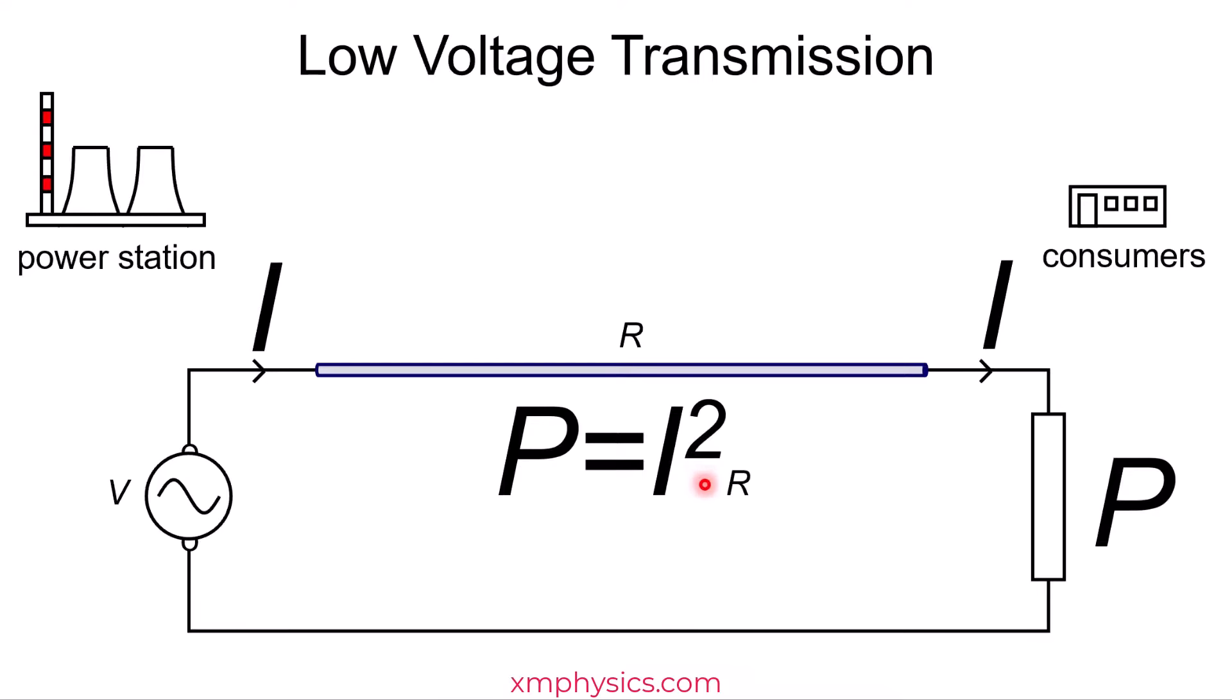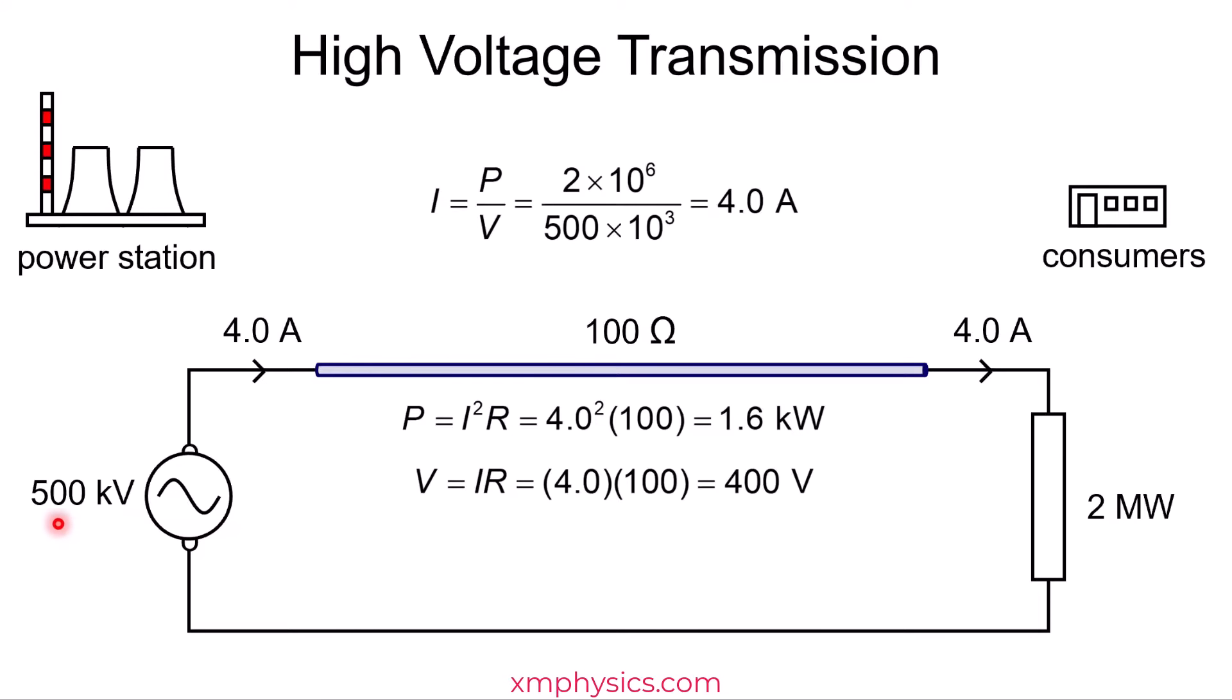Now some students are going to ask, why do we use I²R? Isn't power also equal to V²/R? If power loss in the cable is V²/R, then isn't a small V better than a large V? That's because you are using V²/R wrongly. For example, when we're using 500 kilovolts, the power loss in the cable is not 500,000 squared divided by 100, because the 500 kilovolts is the potential difference between here and here, it's not the potential difference between here and here. In fact, we have calculated the potential difference across the power cable is actually 400 volts. So if you want to do V²/R, you should be doing 400 volt squared divided by 100 ohms, which will give you 1.6 kilowatts too.